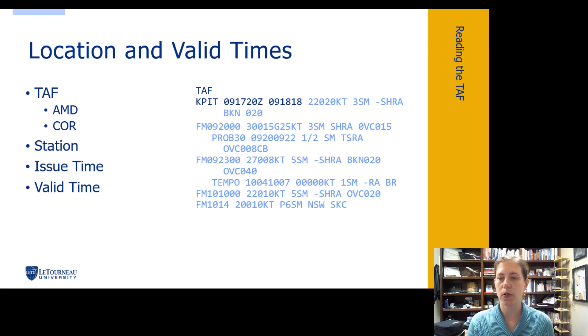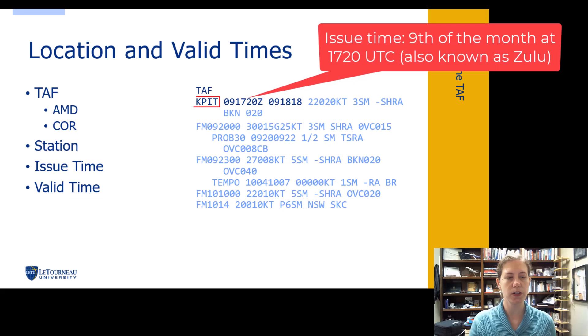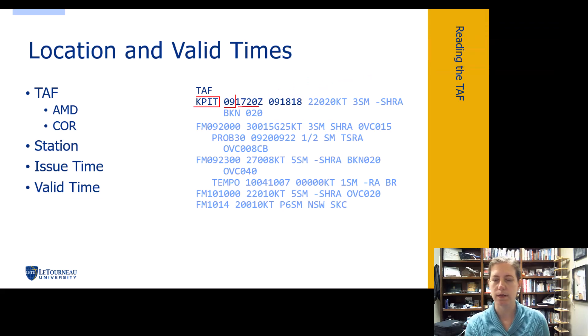First off, we're starting with our location and our valid times. Station that it's for, makes sense. Then we get to our issue time. It's a lot like what you see on a METAR. So we have the day day. So this is on the 9th of the month. And it was issued at 1720 UTC. They put a Z to help remind you. So all the times in here are going to be in UTC. So that's important. That was when it was issued.